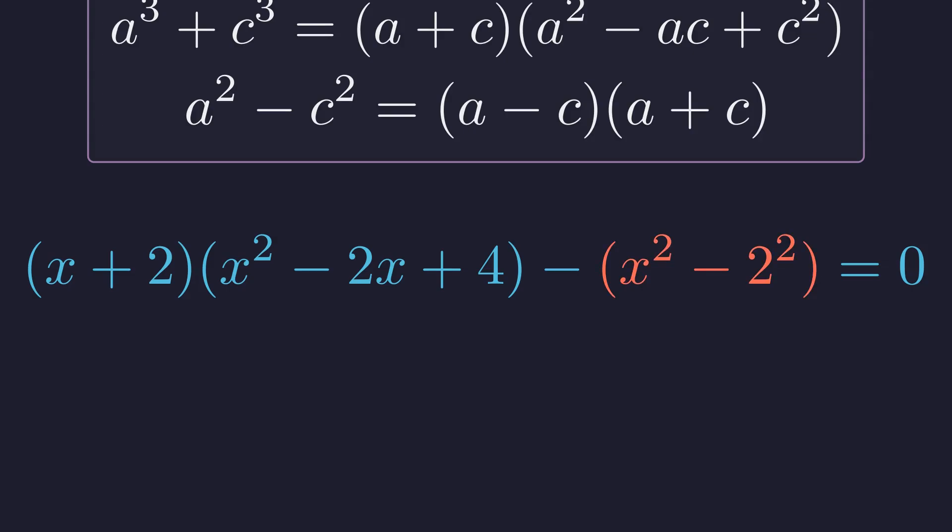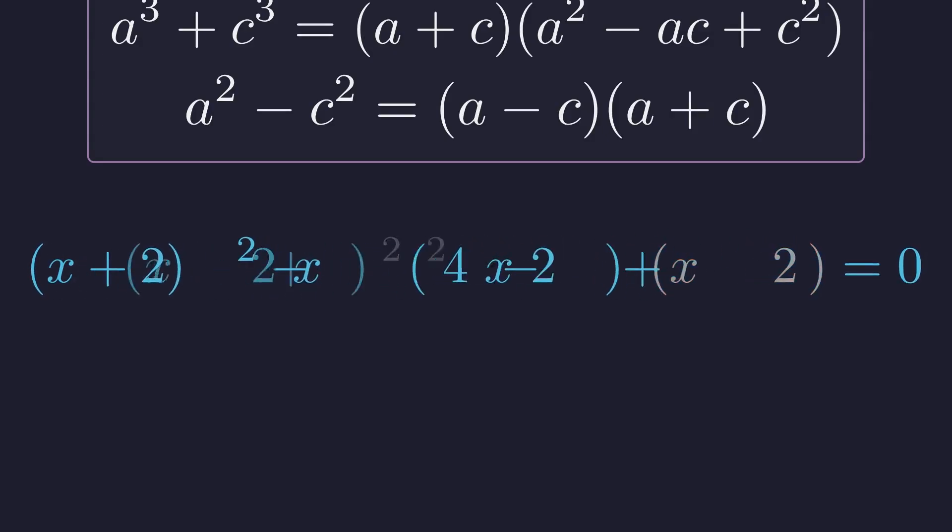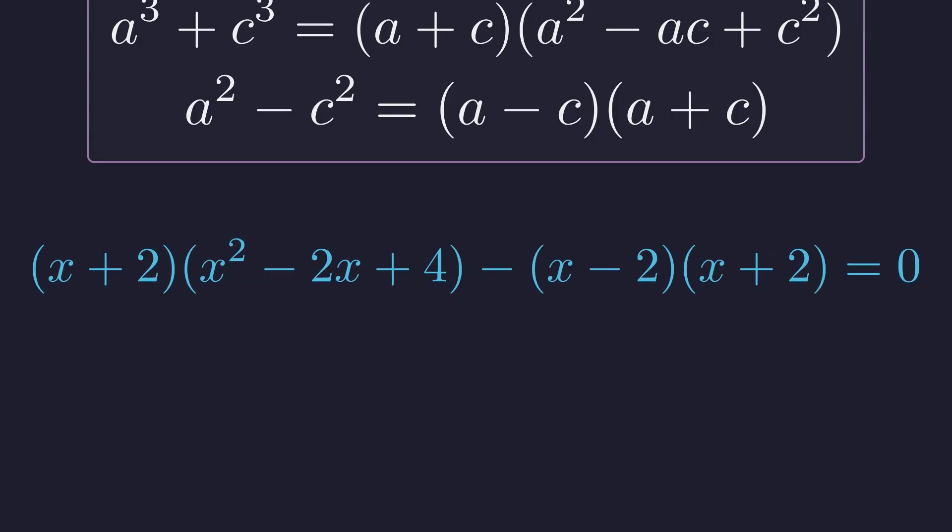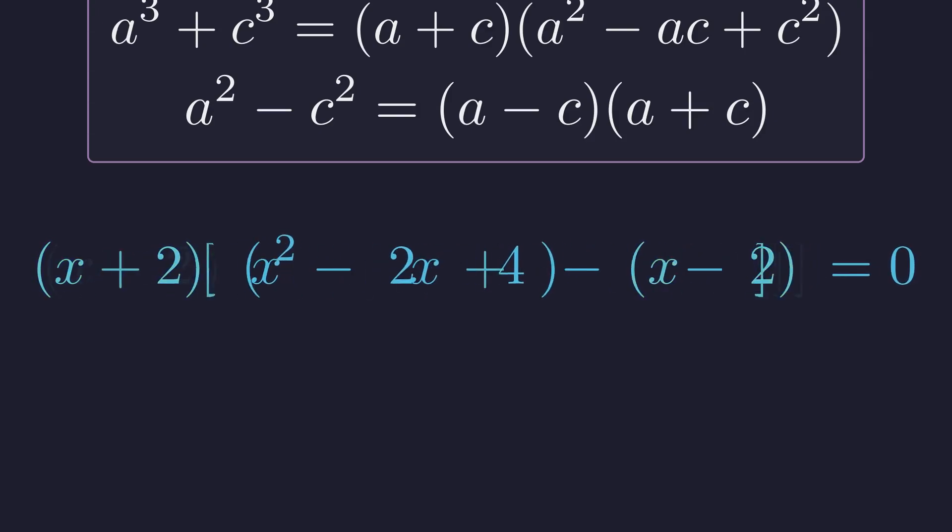Now the difference of squares, which factors as x minus 2 times x plus 2. Notice we have a common factor of x plus 2 appearing in both terms. That's the key. So we factor out x plus 2 from the entire expression.